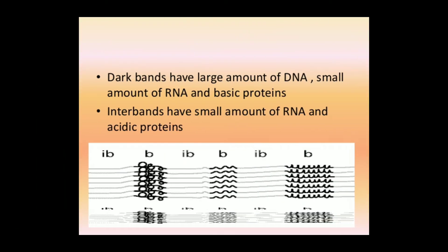Dark bands have a large amount of DNA, small amount of RNA, and basic protein. Inter-bands have a small amount of RNA and acidic protein. So the key difference is: bands contain basic proteins, while inter-bands contain acidic proteins.